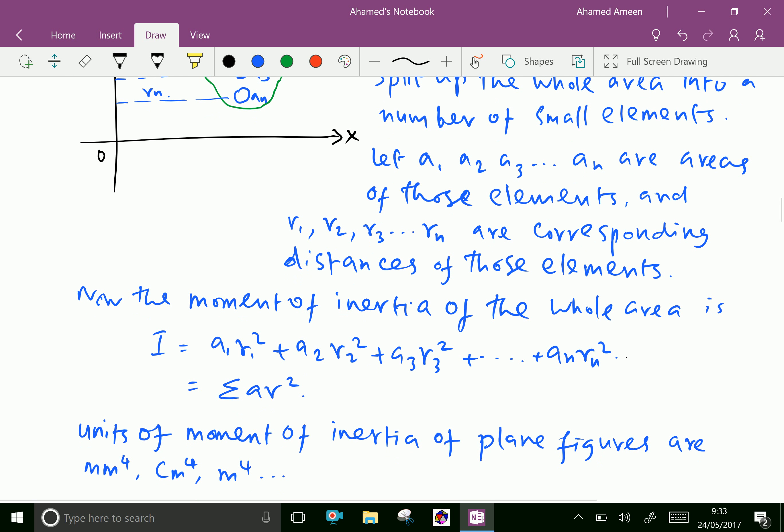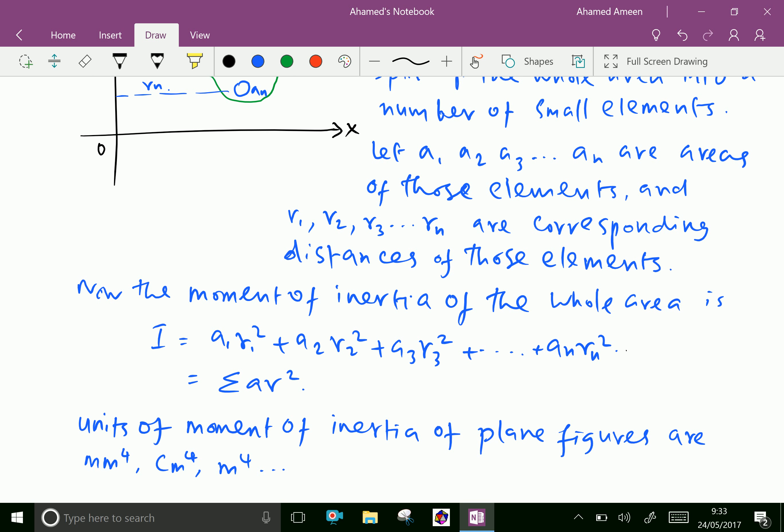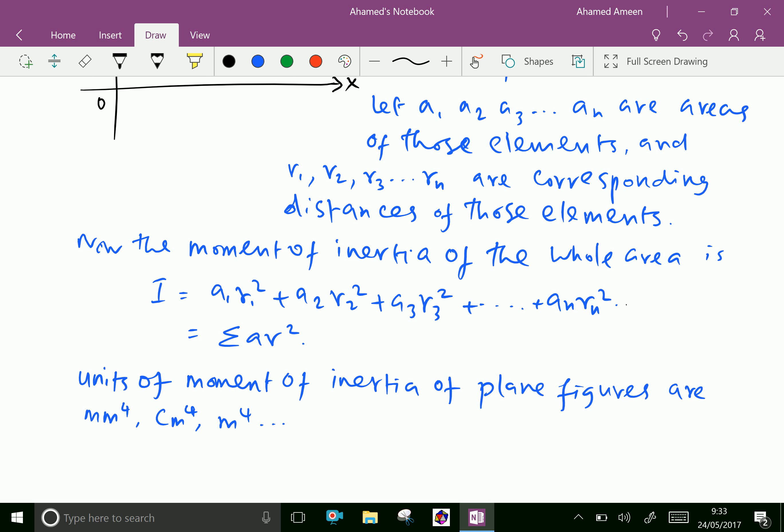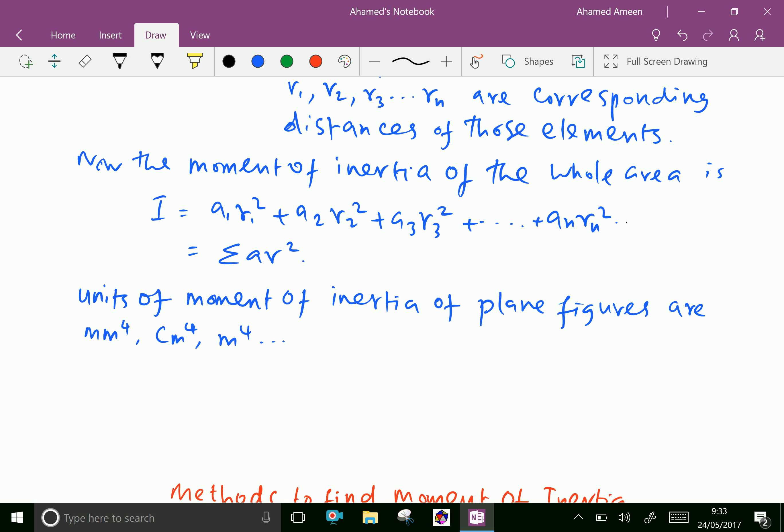Now, totally I equal sigma A R squared. Units of Moment of Inertia of plane figures are mm power 4, cm power 4, m power 4. m power 4 means meter power 4.